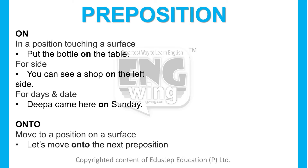Let me explain how to use 'on.' The use of 'on' is to show a position touching a surface. If the surface is stretching on both sides, or if your body or an object is touching the surface, you use 'on.' Second use: for sides — for example, a shop on the left side.